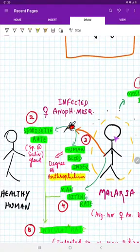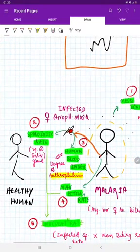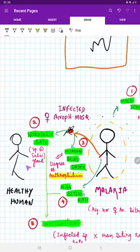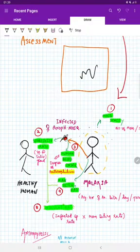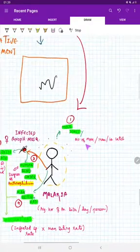See, this is an infected person, this is a female Anopheles mosquito—infected female Anopheles mosquito—and this is a healthy man. From this guy, this mosquito is going to take the blood meal and is going to bite this guy. Around this guy there are many other mosquitoes. So first is mosquito density. Mosquito density is number of mosquitoes per man per hour.